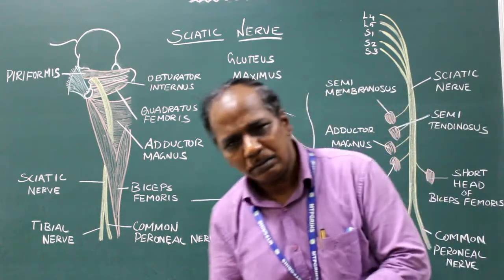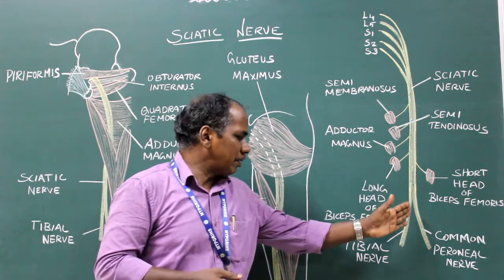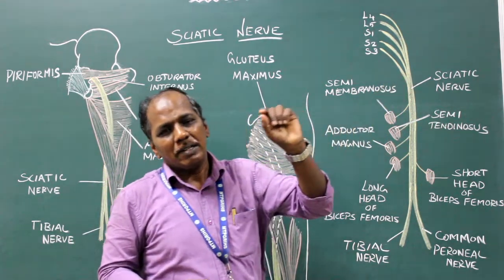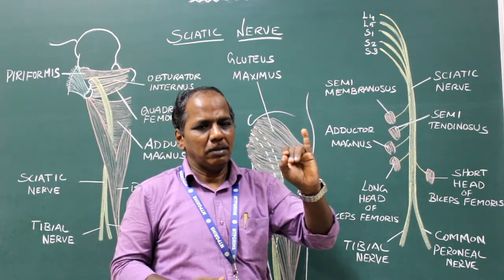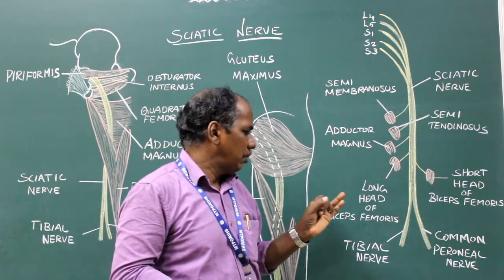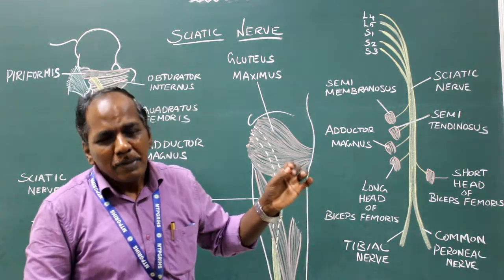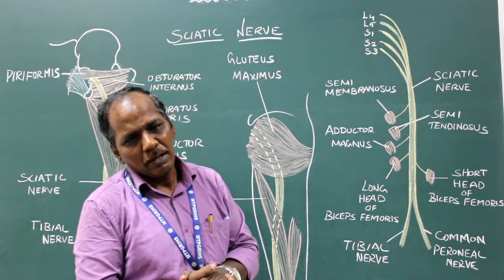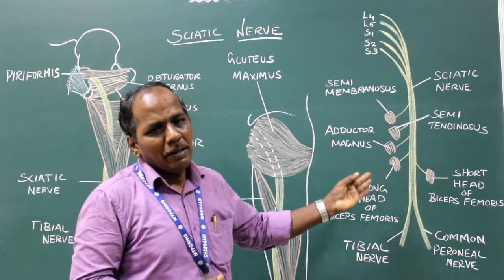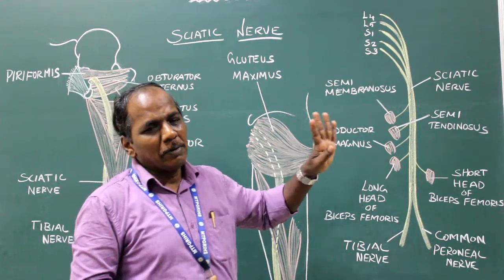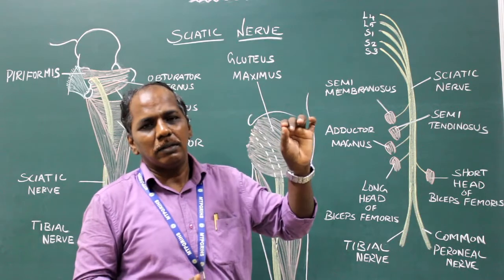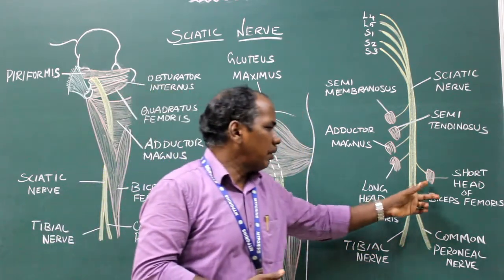Regarding branches and distribution: there are two components, the tibial and the common peroneal. From the main trunk, the sciatic nerve gives an articular branch to the hip joint. The tibial component gives muscular branches to the hamstring muscles: semitendinosus, semimembranosus, long head of biceps femoris, and the hamstring part of adductor magnus. The peroneal component gives a muscular branch to the short head of biceps femoris.